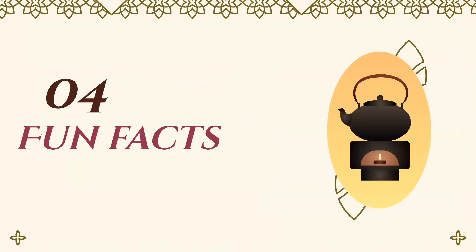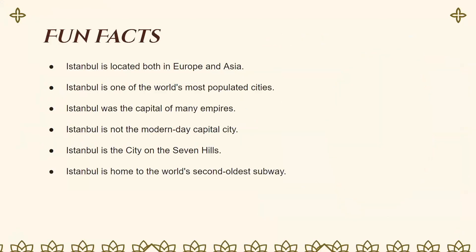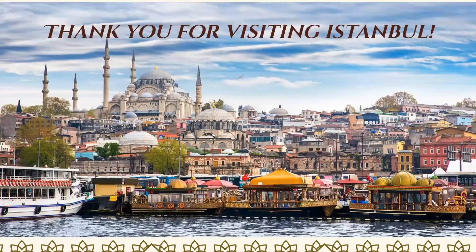Lastly, some fun facts about Istanbul: it is located both in Europe and in Asia; it is one of the world's most populated cities; Istanbul was the capital of many historic empires; Istanbul is not the modern-day capital — Ankara is the capital city of Turkey; Istanbul is built on seven hills; and Istanbul is home to the world's second oldest subway. Thank you for visiting Istanbul!